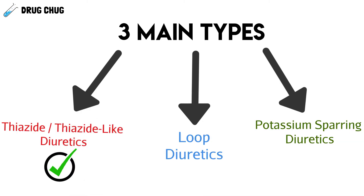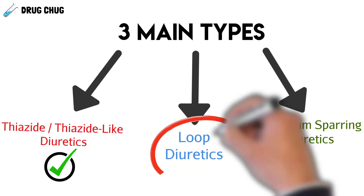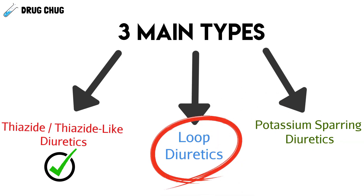That was a lot of information about thiazide and thiazide-like diuretics — dense, but probably the hardest class to cover. Because this video is getting long, I'm breaking it into parts. In part two, we'll talk about loop diuretics. I'll put the link in the description below. Until next time!